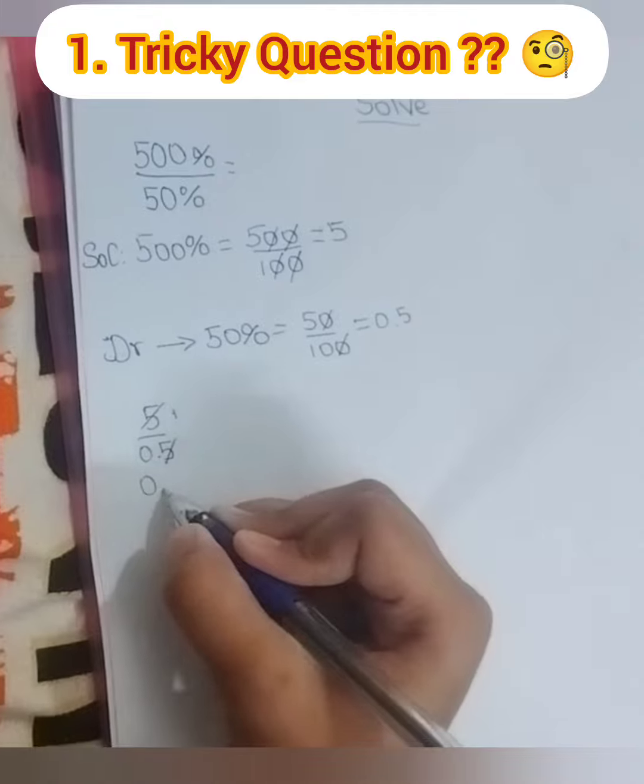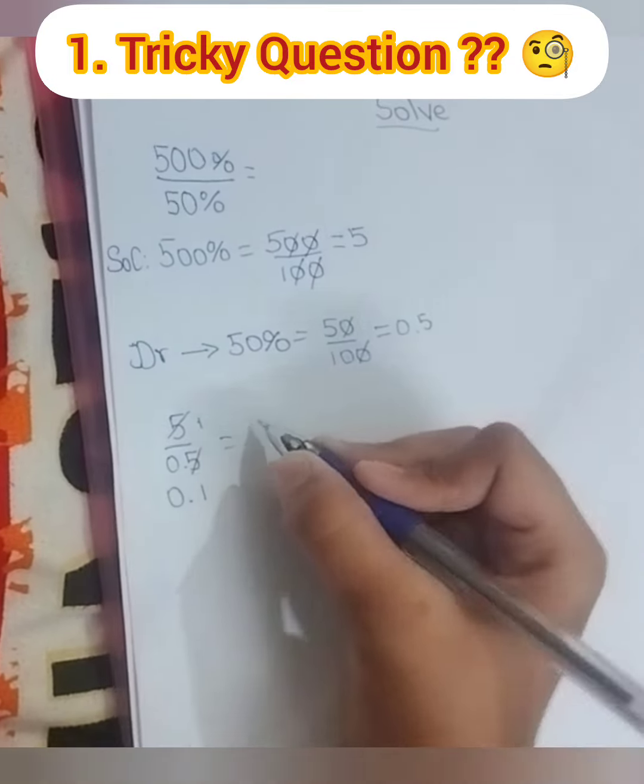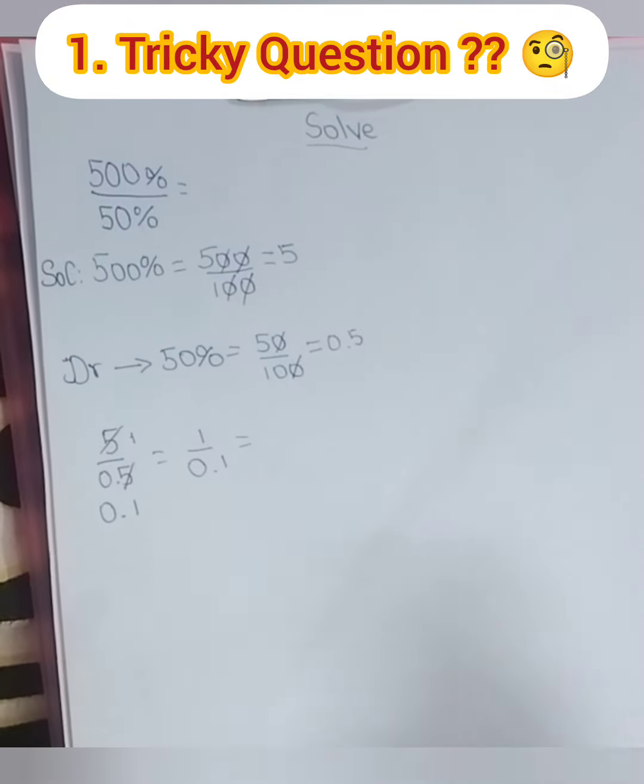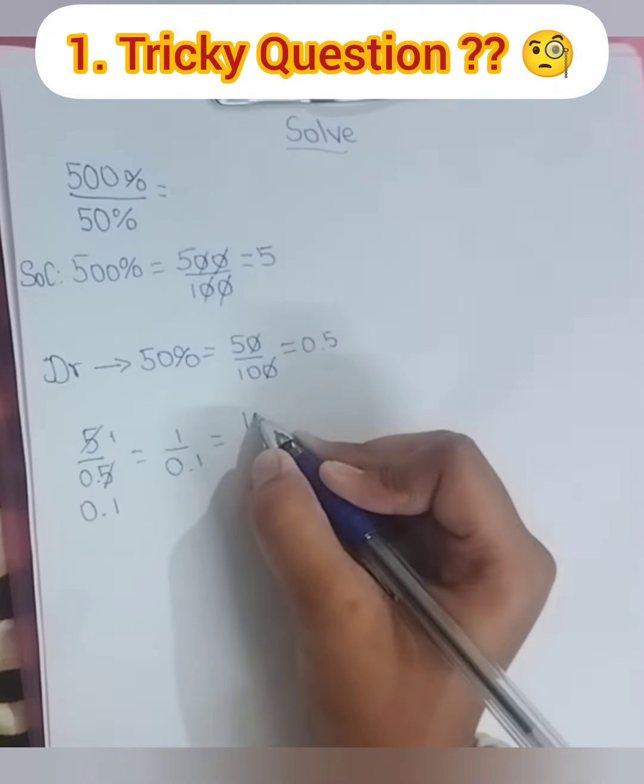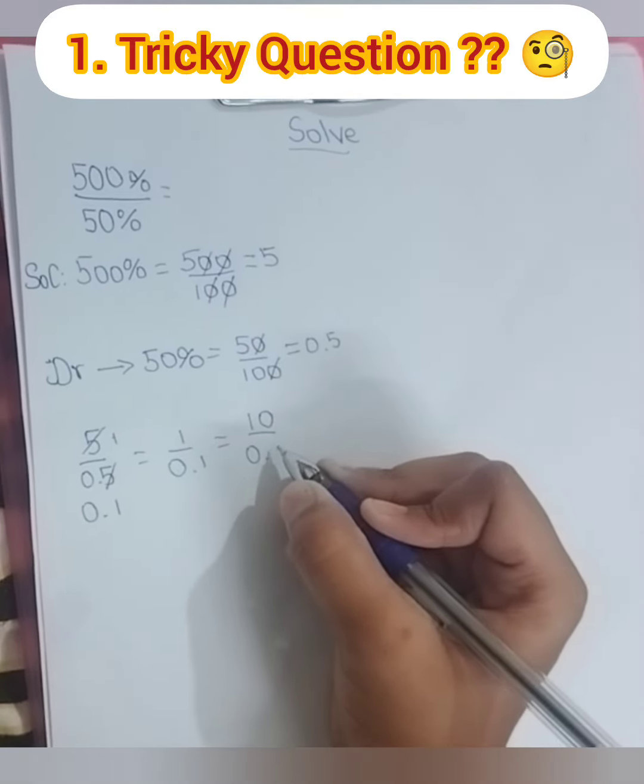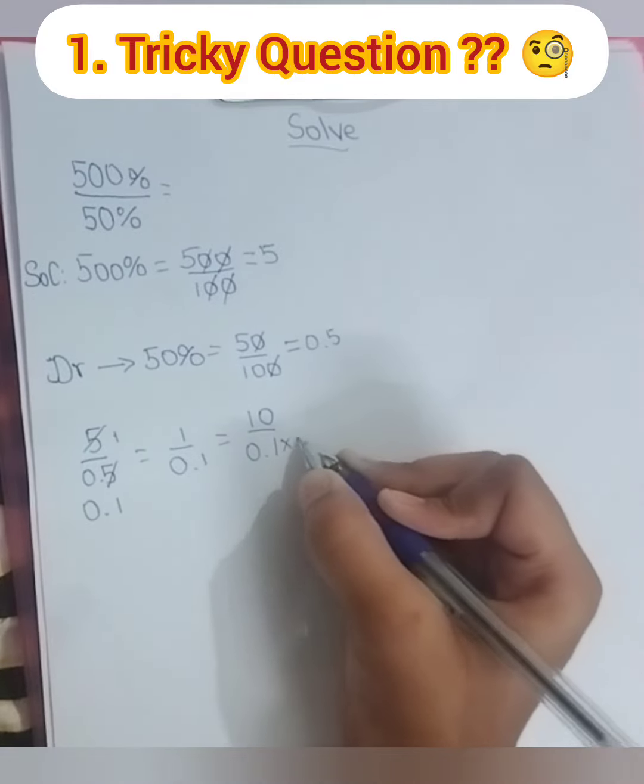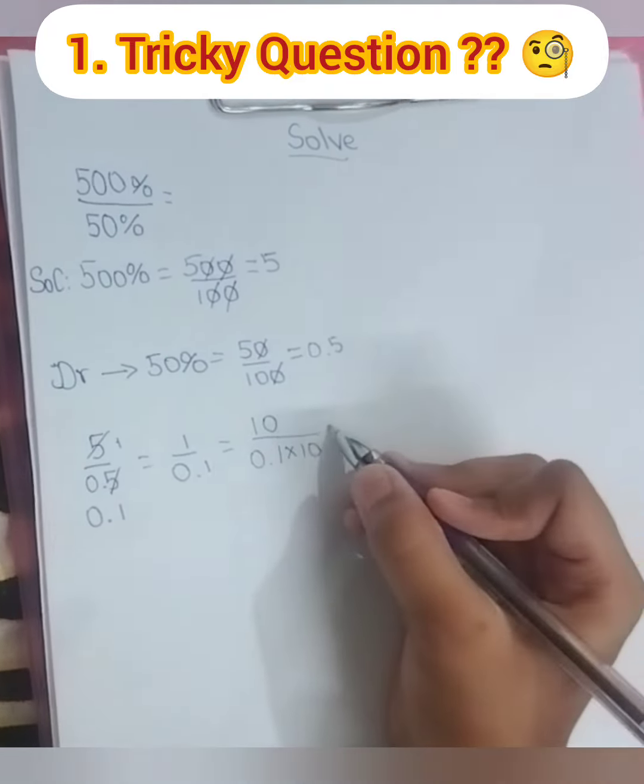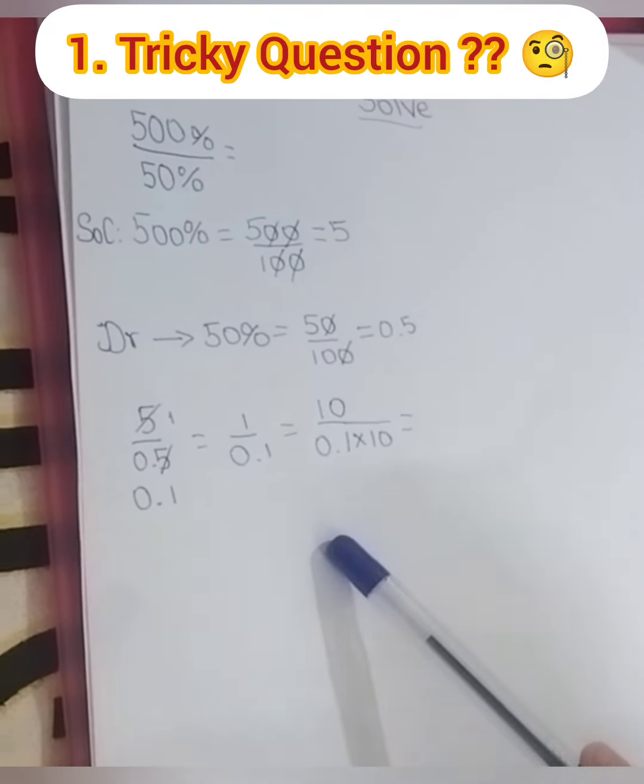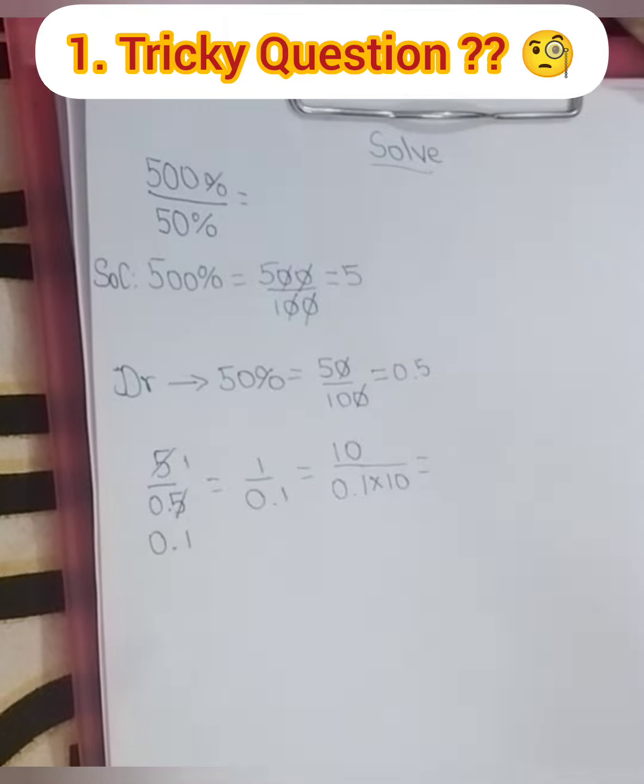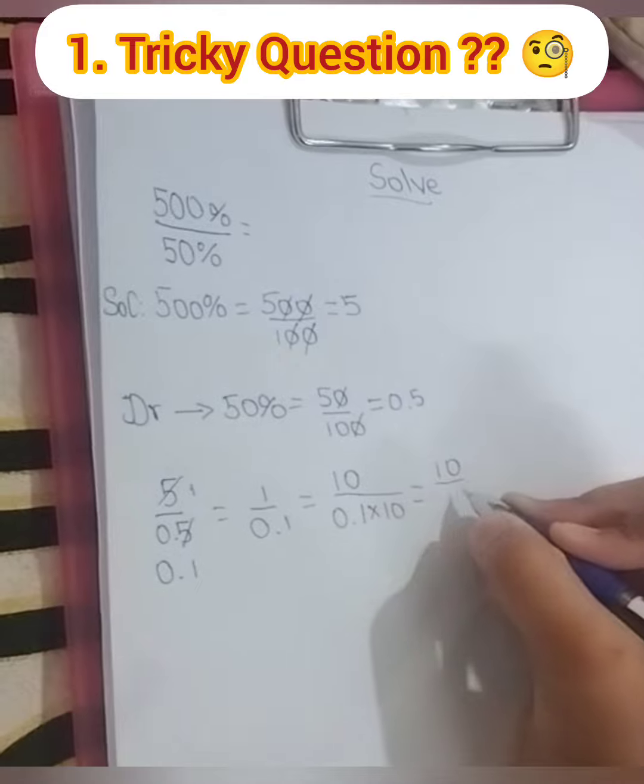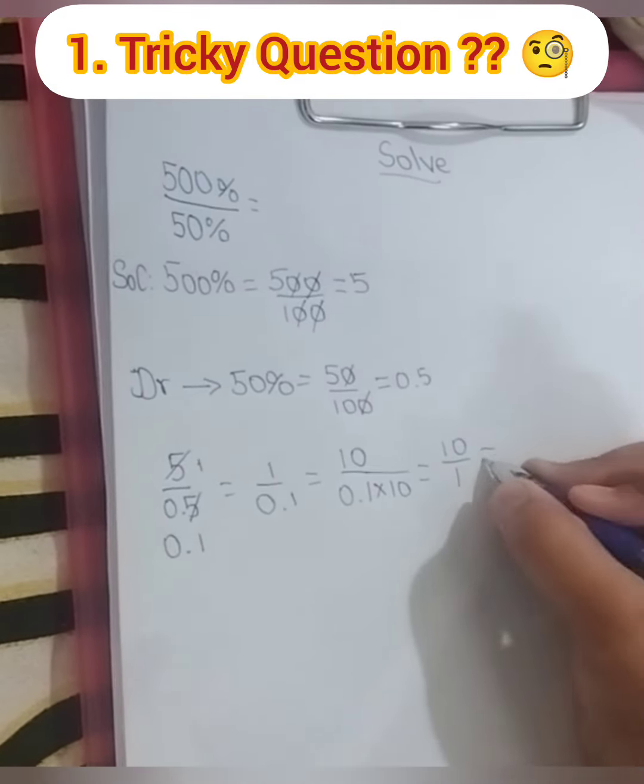For the denominator it becomes 0.1, which is equal to 1 by 0.1. Now we have to convert this into a fraction, so it becomes 10 by 1. We can also write this as 10.